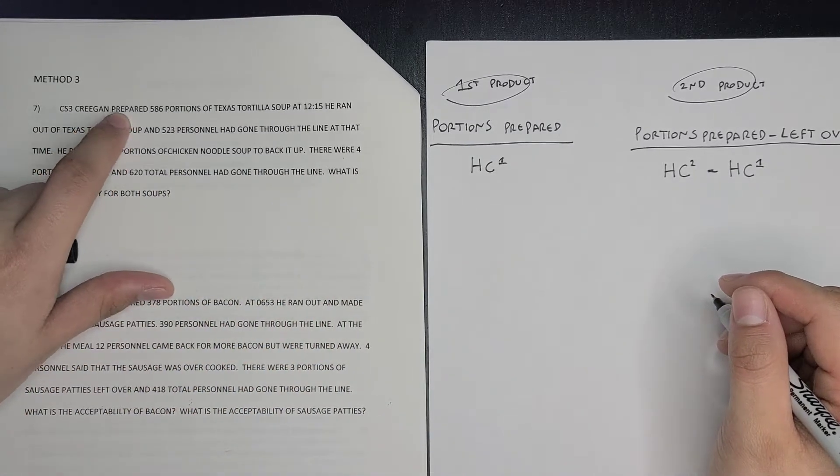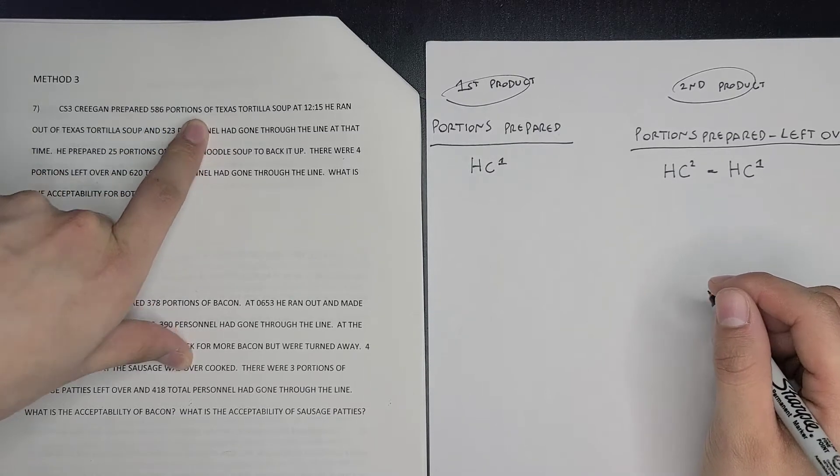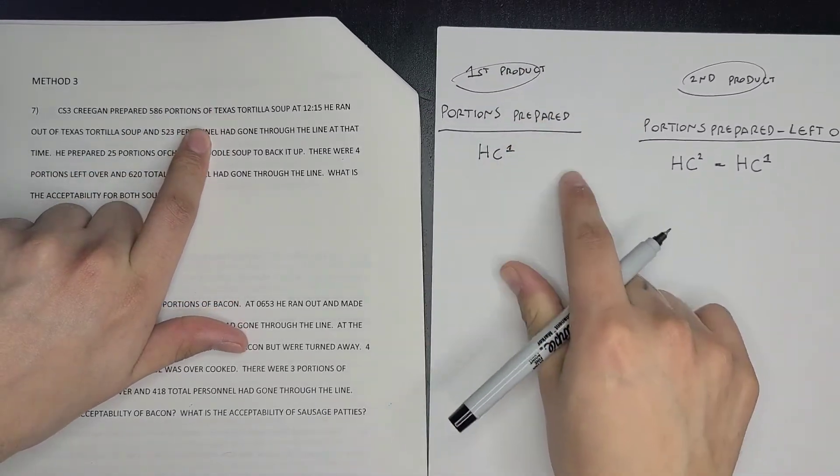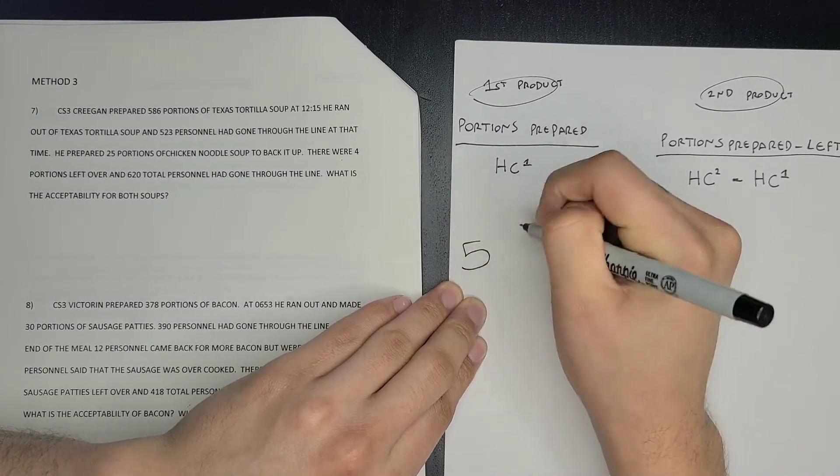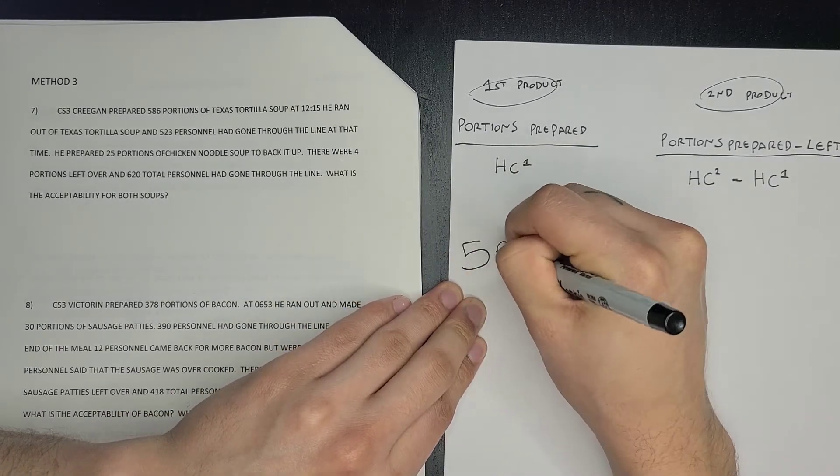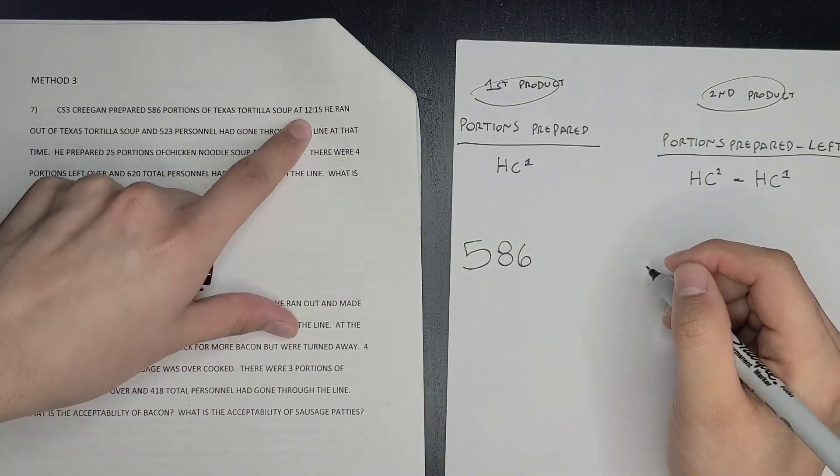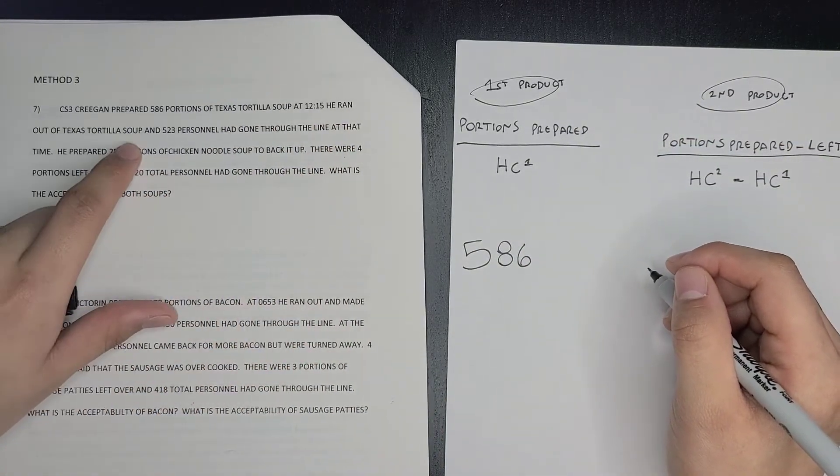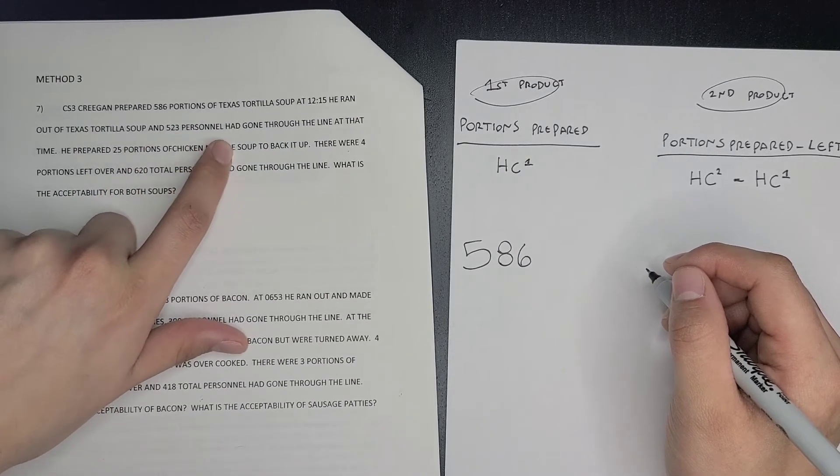CSD Green prepared 586 portions of Texas tortilla soup, so that is your first product. Your portions prepared was 586. At 12:15 he ran out of Texas tortilla soup and 523 personnel had gone through the line.